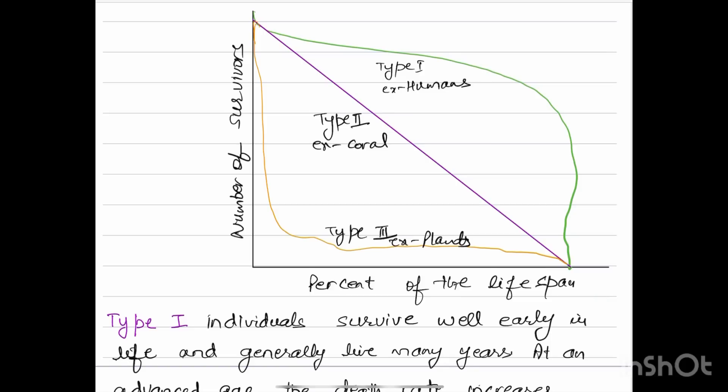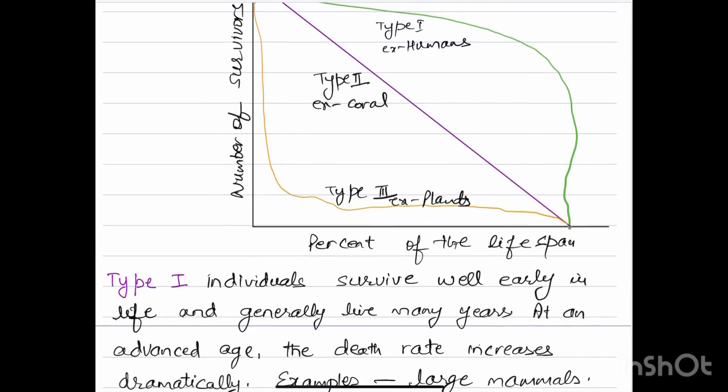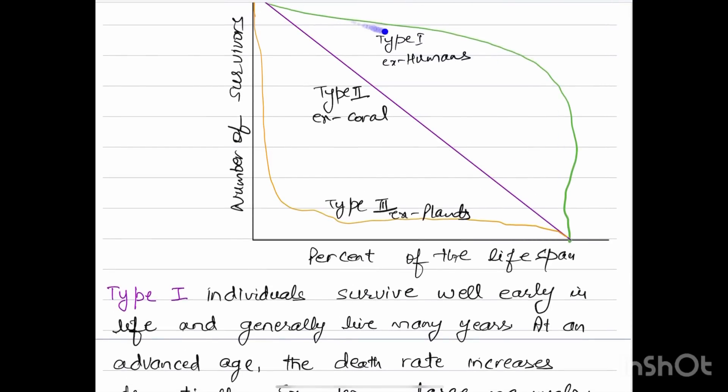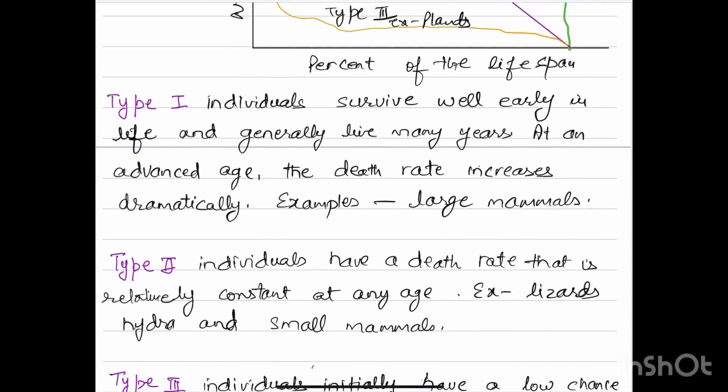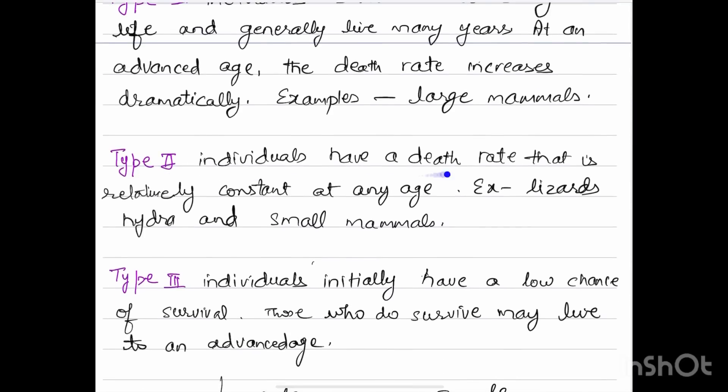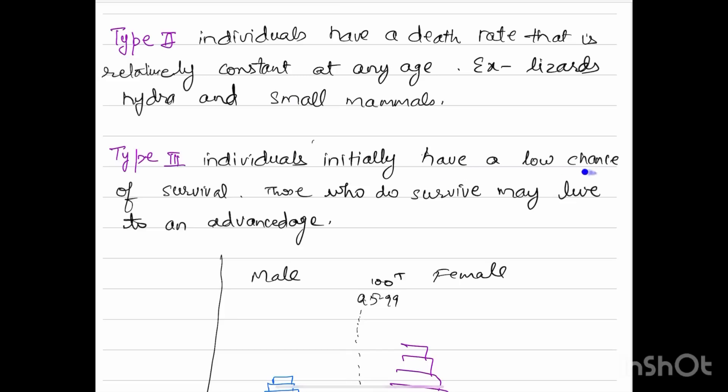Type 1 individuals survive well early in life and generally live many more years, with death rate increasing dramatically at an advanced age. Examples include large mammals. Type 2 individuals have a death rate that is relatively constant at any age, for example lizards, hydra, and small mammals. Type 3 individuals initially have a low chance of survival, and those who do survive may live to an advanced age.